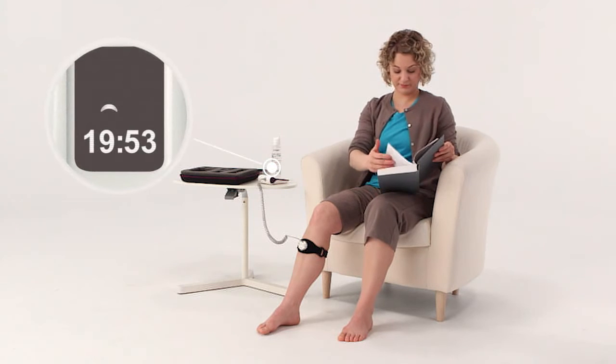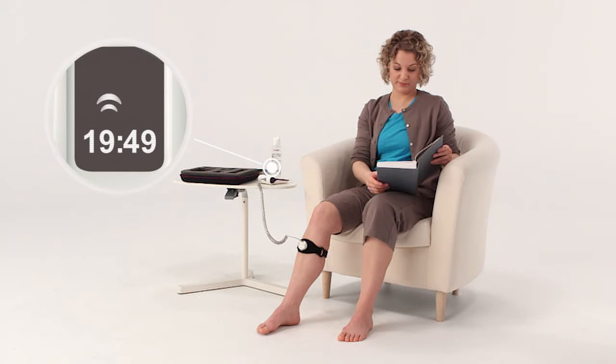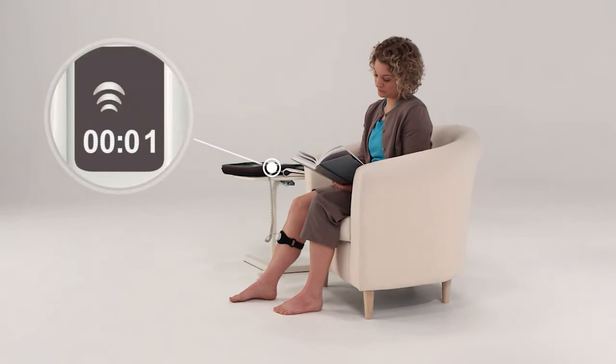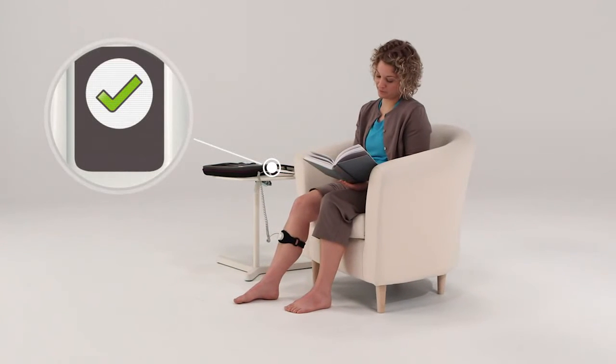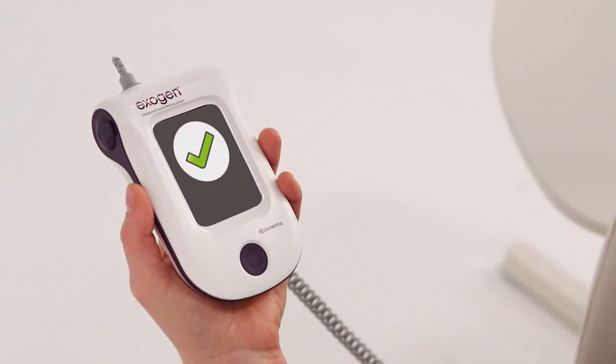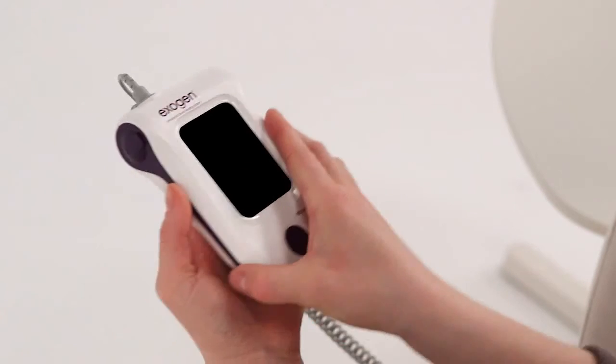As the timer counts down, the treatment symbol flashes to indicate the device is treating your fracture. When the timer reaches zero, you'll hear a beep and see a treatment complete check mark. After five seconds, the Exogen device will beep and turn itself off, indicating that you have successfully performed your Exogen treatment.